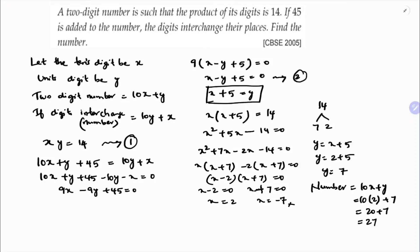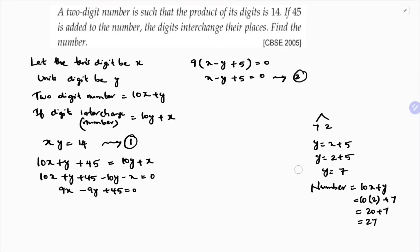Now I will explain the same problem with the help of linear equations by using algebraic identities. I will solve the same problem by using algebraic identities. I have the value of x minus y here. I will write this as x minus y equals minus 5.